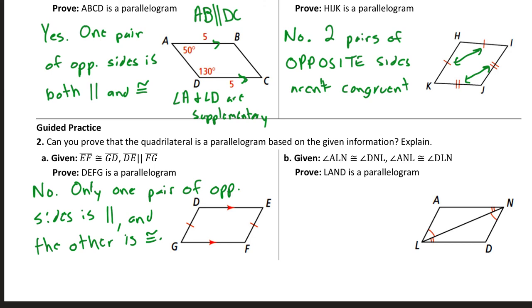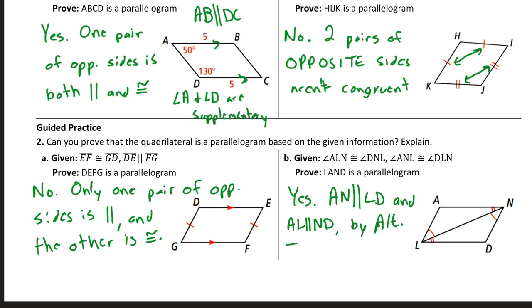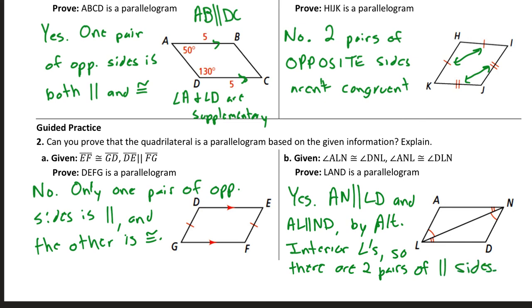For guided practice part B, this one is a parallelogram — there is enough information. AN is parallel to LD, and the other pair of sides is also parallel by alternate interior angles. So there are two pairs of parallel sides in that quadrilateral, making it a parallelogram.